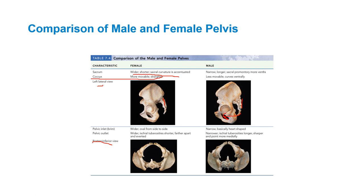Looking from the posterior inferior view, the coccyx is facing us and the pubic bone is up here. The female pelvis is much wider and more oval from side to side. The ischial tuberosities are shorter and further apart — those are what you sit on. The male pelvic inlet is much more narrow, like a heart shape.